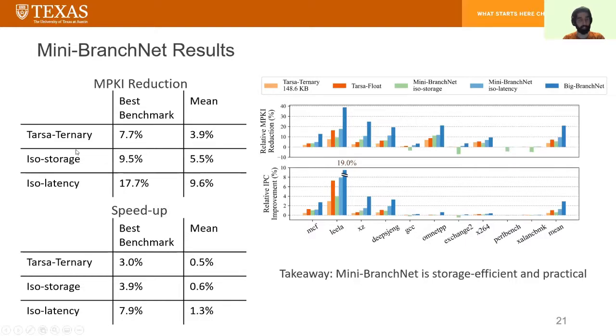In ISO storage configuration, we took away storage from TAGE and gave it to BranchNet. In ISO latency, we simply use additional storage for BranchNet as long as it doesn't add to the overall latency. We also compare to Tarsa ternary, but note that Tarsa ternary uses as much more than four times the storage needs of ISO latency BranchNet.